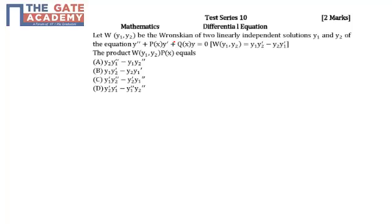Hello students. The following question is from the test. Subject: Mathematics, Chapter: Differential Equations. The question asks: let W(y1, y2) be a function of two linearly independent solutions y1 and y2 of the equation y'' + p(x)y' + q(x)y = 0, where W(y1, y2) = y1·y2' - y2·y1'. Then the product W(y1, y2) · p(x) equals the following.